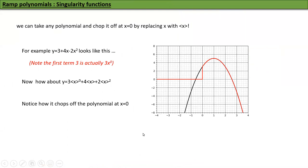We can also do ramp polynomials, just as we have regular polynomials. Take any polynomial and chop it off at x = 0 by replacing x with ⟨x⟩. For example, y = 3 + 4x − 2x² (a parabola — note the constant 3 is really 3·x⁰) becomes y = 3·⟨x⟩⁰ + 4·⟨x⟩¹ − 2·⟨x⟩². The result has everything to the left of x = 0 set to zero, and the polynomial intact to the right.